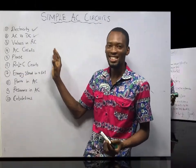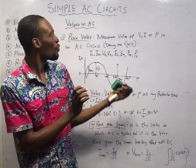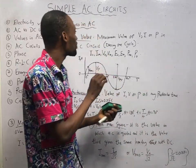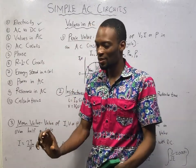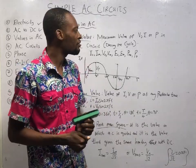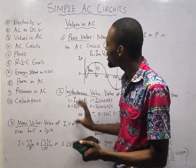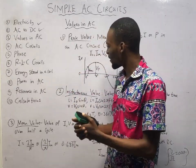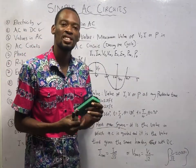Let's take a look at values in AC. Your understanding of this part will either be the beginning of your success or your undoing when it comes to calculations in AC circuits. We shall be considering four major values in AC: the peak value, the instantaneous value, the mean value, and the root mean square value.